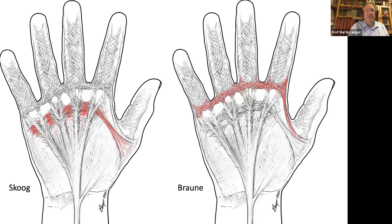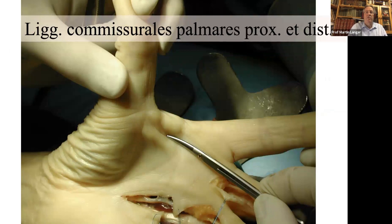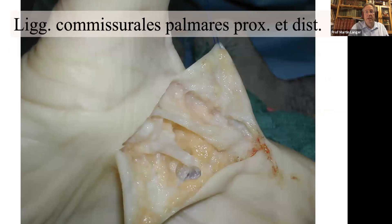If you look to the radial extensions — the Skoog ligament, the Raunus ligament, and the natatory ligament to the thumb — there are two different structures called the proximal and distal palmar commissural ligaments. You can find both the distal and proximal ones in Dupuytren's disease cases when they are affected.